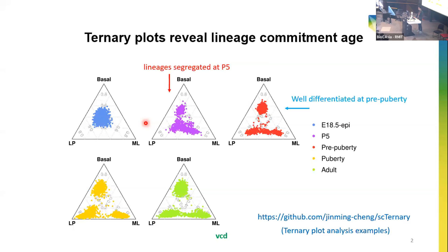The ternary plot method was previously used in published papers to investigate mouse mammary gland epithelial cell types and cell lineage commitment age. We improved this method by using signature gene proportion. The ternary plots show the major cell types in mouse mammary gland epithelium: basal cells, LP cells, and ML cells. According to the ternary plots, the cell lineages are not committed at E18.5 days, but are segregated at early postnatal five days.